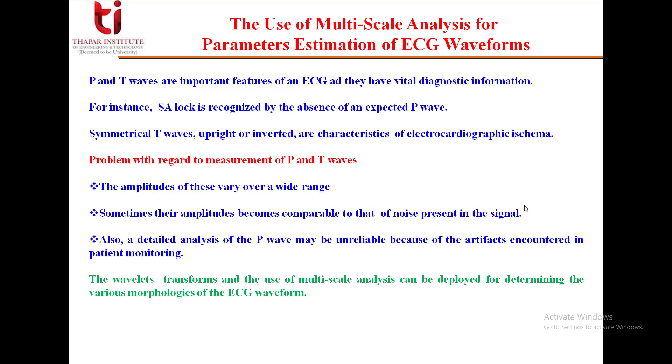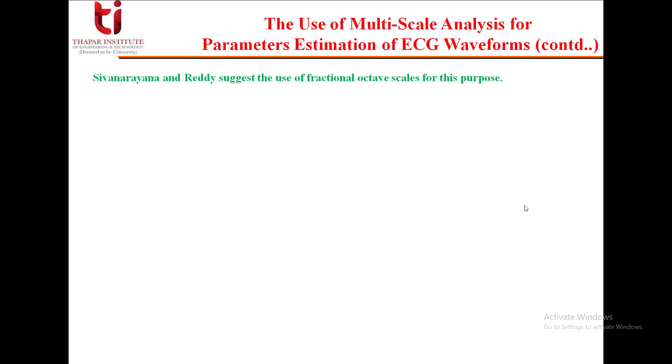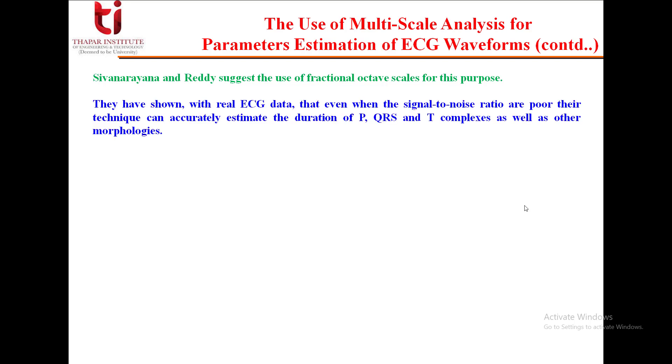The wavelet transform and the use of multi-scale analysis can be deployed for determining the various morphologies of the ECG waveform. But all the morphologies cannot be resolved at these scales since the duration of P, QRS, and T waves are not integer multiples. Sivnarayana and Reddy suggested the use of fractional octave scales for this purpose. They have shown with real ECG data that even when the signal to noise ratio are poor, their technique can accurately estimate the duration of P, QRS, and T complexes as well as other morphologies.